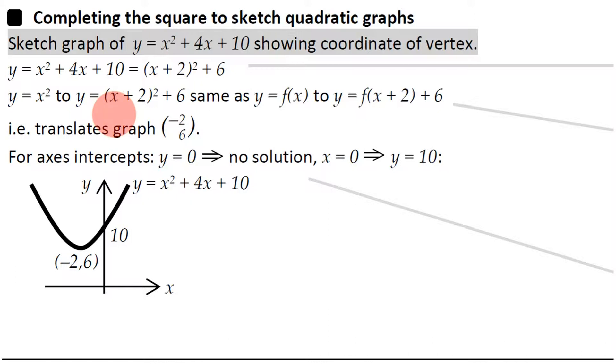Now on top of that, I haven't just replaced the x with an x plus 2, I've also added a 6 at the end, which is like adding a 6 at the end of the function or outside the bracket. So in short, changing the graph from y equals x squared to y equals (x+2)² plus 6 is like changing the graph from y equals f(x) to y equals f(x+2) plus 6.